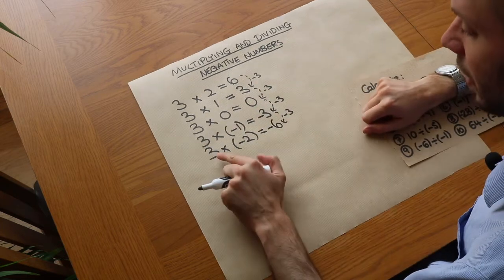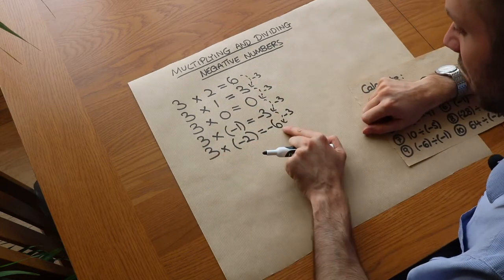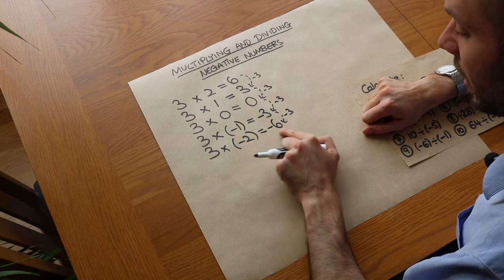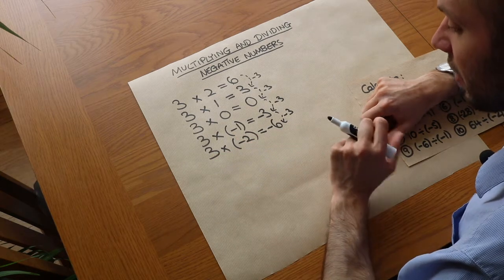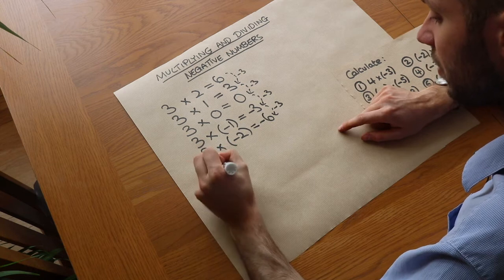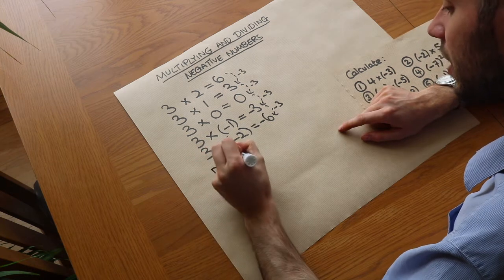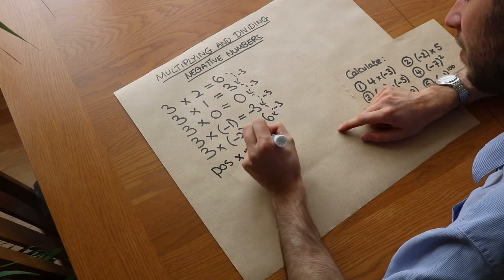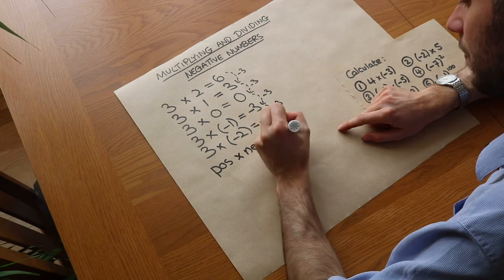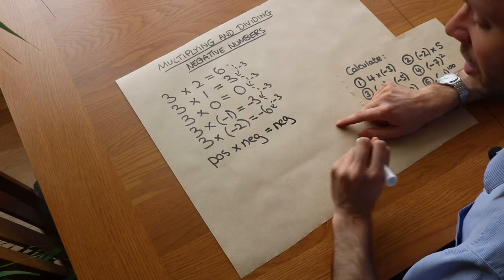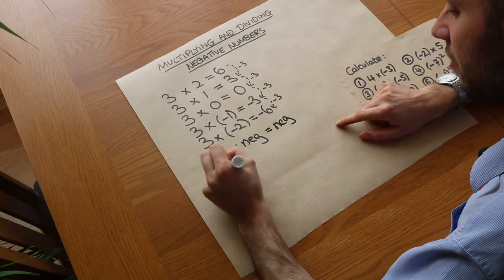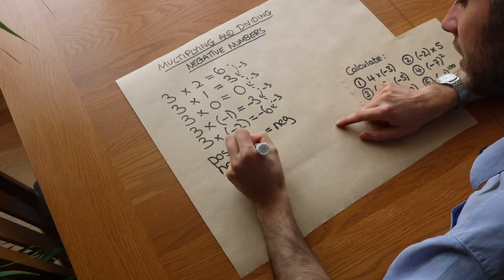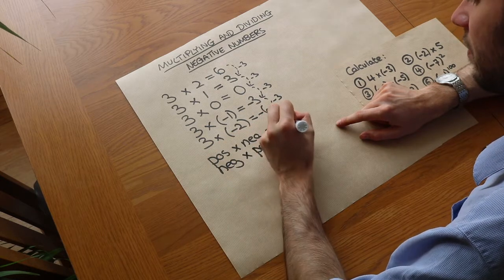So you can see that 3 times 2 is 6, and 3 times negative 2 is minus 6. It seems that when we have a positive number times a negative number, that gives you a negative number. Similarly, we could show that if we have a negative number times a positive number, we also get a negative number.